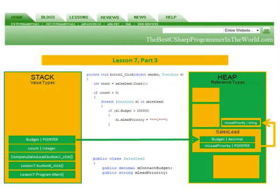The stack keeps track of what's going on in your program and it executes the methods in a last-in, first-out manner. The methods or values at the top of the stack have to be used before the methods underneath are processed.